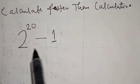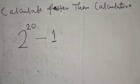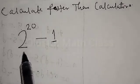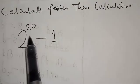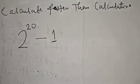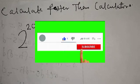Calculate faster than a calculator: 2 raised to power 20 minus 1. Hi everyone, welcome to my class. In this class we want to look at how we can easily calculate 2 raised to power 20 minus 1 without using a calculator. This is going to be done in one minute, but before we proceed please don't forget to like, share, comment and subscribe.